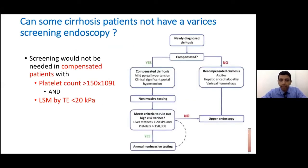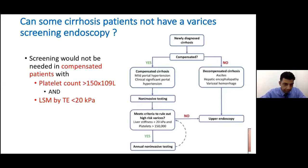Do all cirrhotic patients still need an endoscopy? The answer is not really. For a compensated patient, if the platelet count is more than 150 and liver stiffness is less than 20, varices are very unlikely and therefore endoscopy is not needed according to Baveno 7. However, we do need to repeat these non-invasive tests yearly.